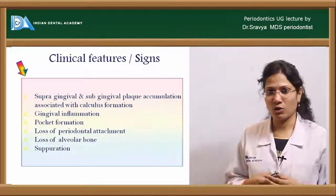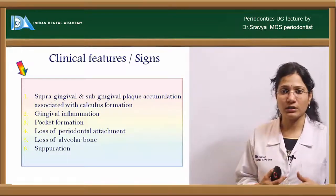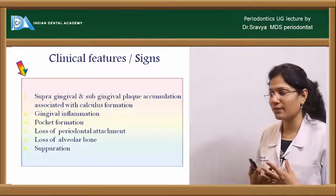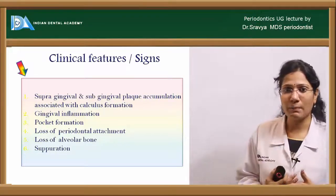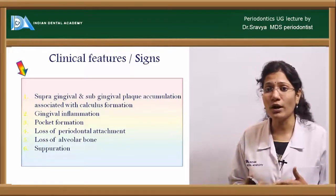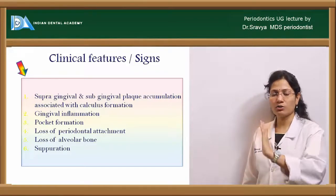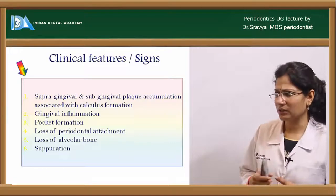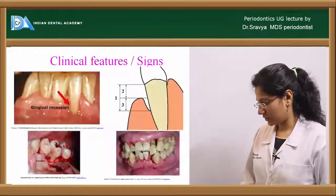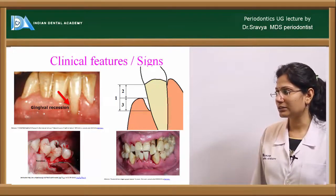Clinical signs on examination include moderate to severe periodontal pockets, clinical attachment loss, and loss of alveolar bone visible on radiographs as horizontal or vertical bone loss patterns. Suppuration — pus expressed when digital pressure is applied to the external pocket surface — may also be present. Local factors such as supragingival and subgingival calculus and plaque are associated findings, along with furcation involvements.